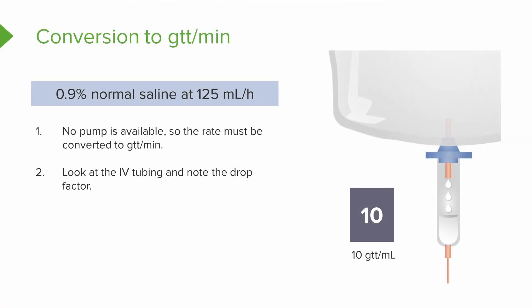Look at the IV tubing and note the drop factor. You see the big 10 there - it tells us 10 drops per milliliter. So we know that's our drop factor. This macrodrip set is 10 drops per milliliter. We need to convert 125 milliliters per hour to drops per minute.